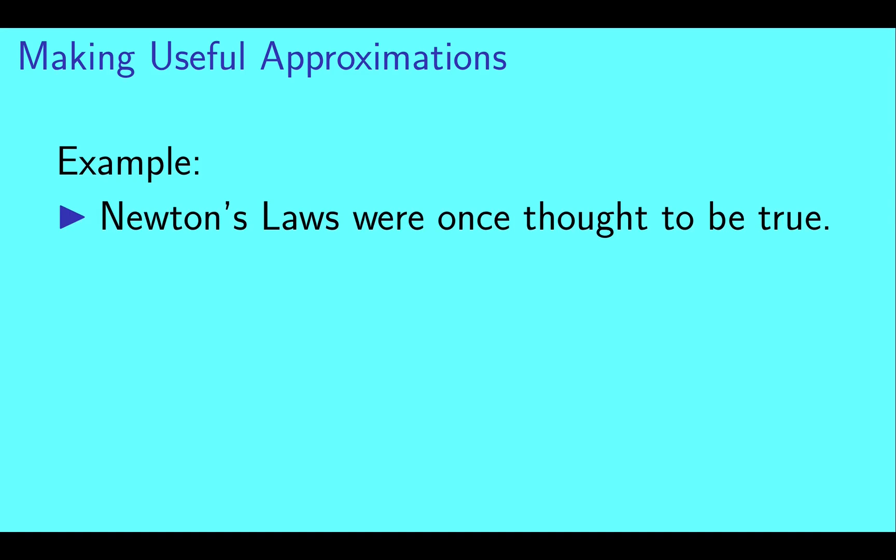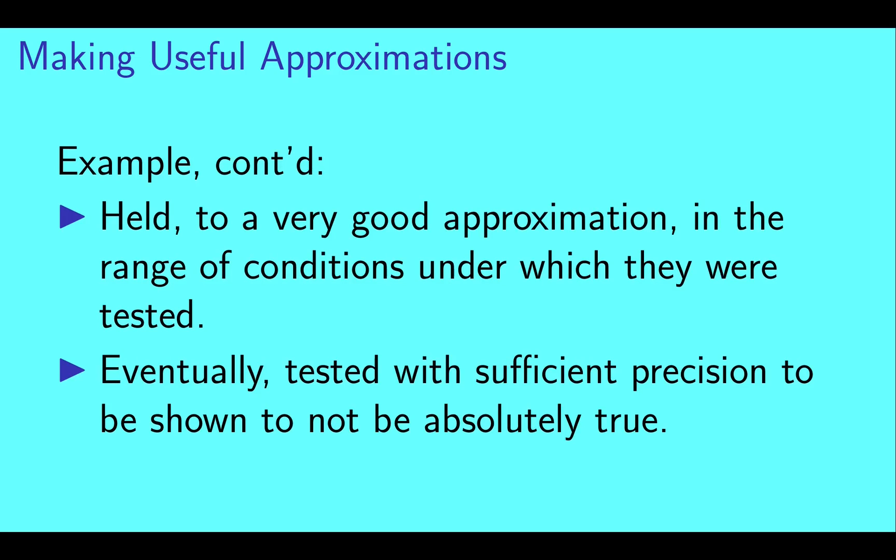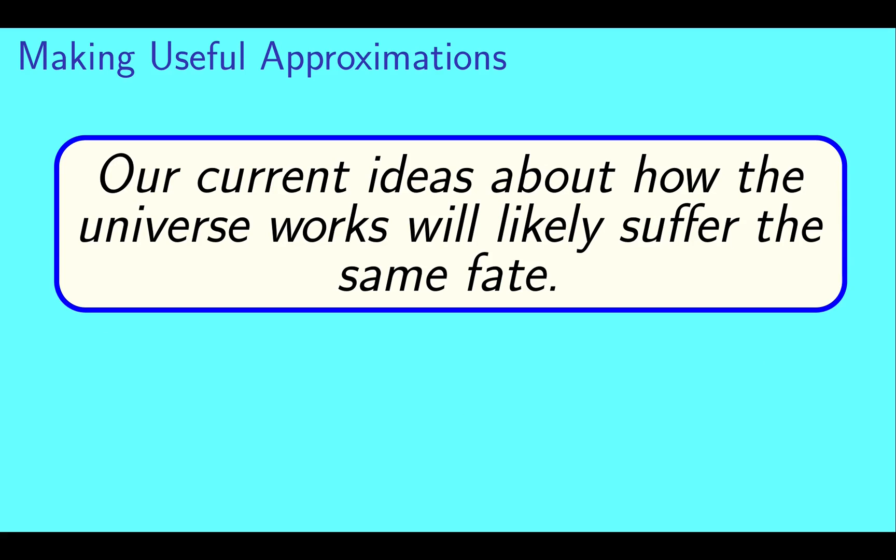Let's look at a possibly familiar example. Newton's laws were once thought to be true. They're not, by the way. So if they're not true, why did people believe that they were? Newton's laws held to a very good approximation in the range of conditions under which they were tested. Eventually, they were tested with sufficient precision to be shown to be not absolutely true. Our current ideas about how the universe works will almost certainly suffer the same fate. If you'd like more details on this, check out the video The Standard Model is Probably a Spherical Cow, available on this channel.